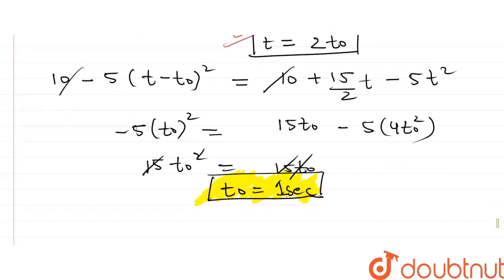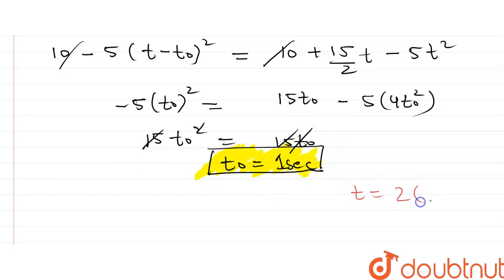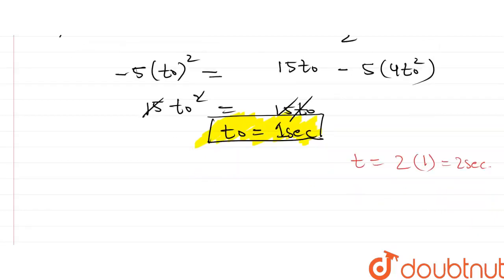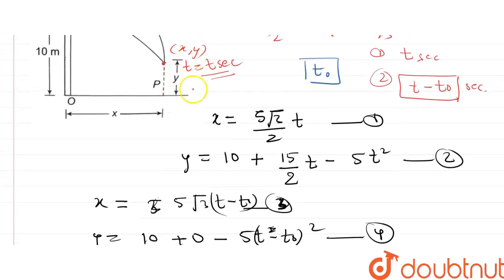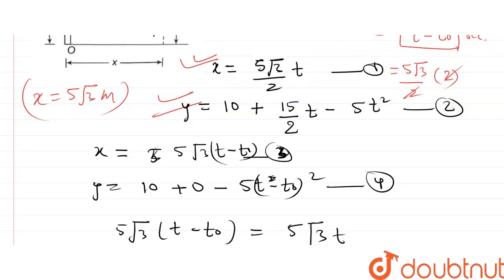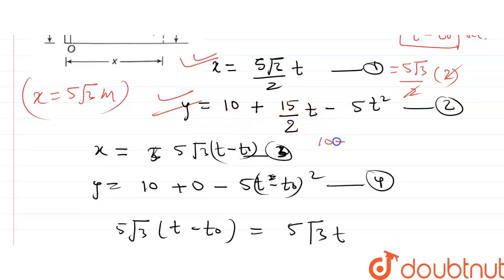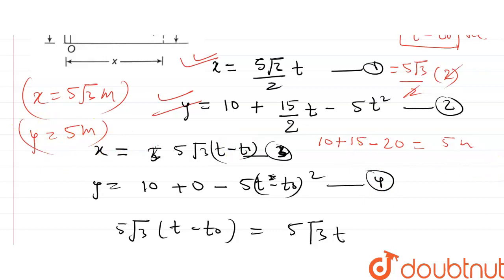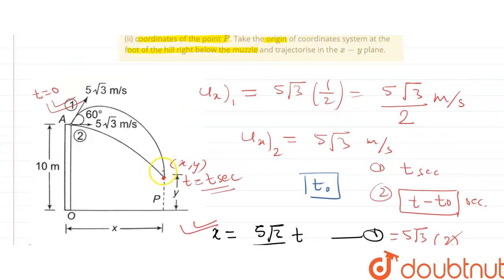Now calculating the coordinates: since t = 2·t0 = 2×1 = 2 seconds, the time of flight for the first shot is 2 seconds. Putting t = 2 into the x equation: x = (5√3/2) × 2 = 5√3 meters. Putting t = 2 into the y equation: y = 10 + 15 − 20 = 5 meters. So the coordinates of point P are (5√3, 5).